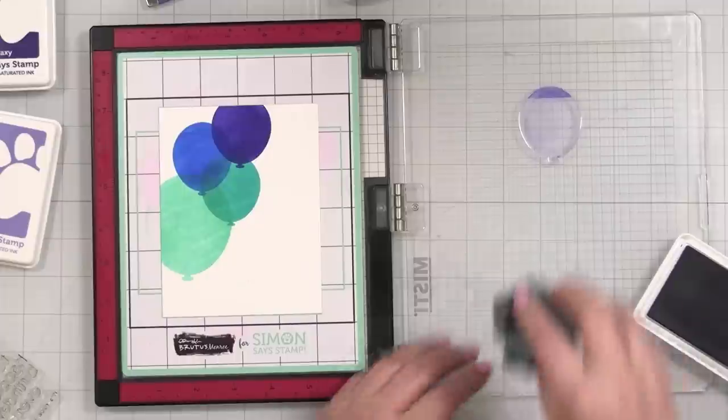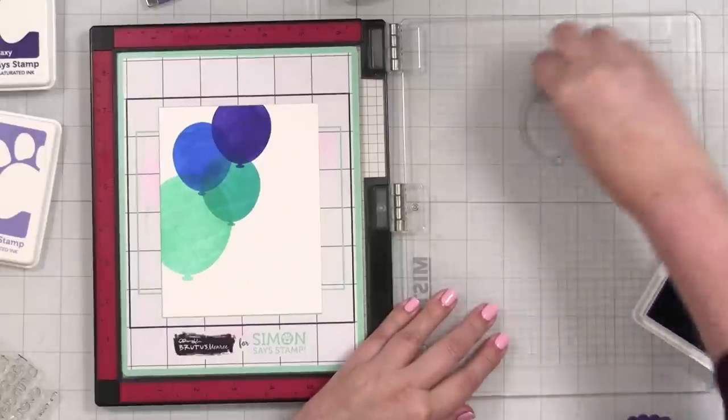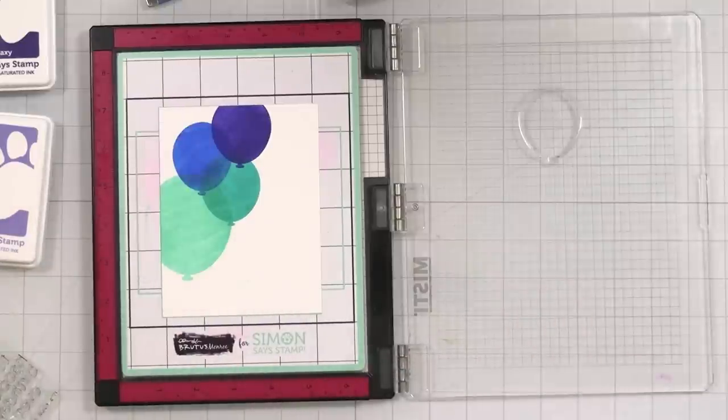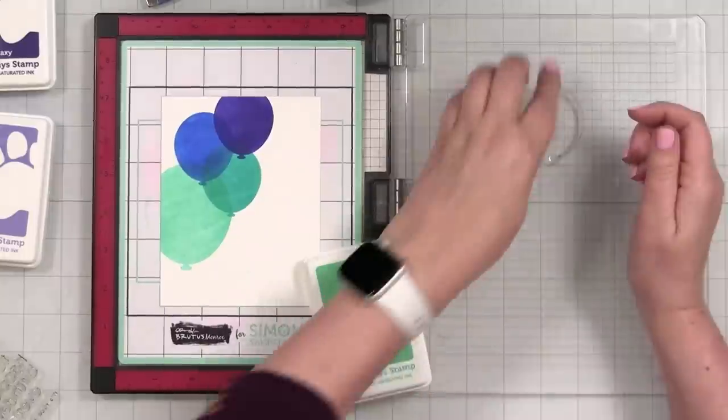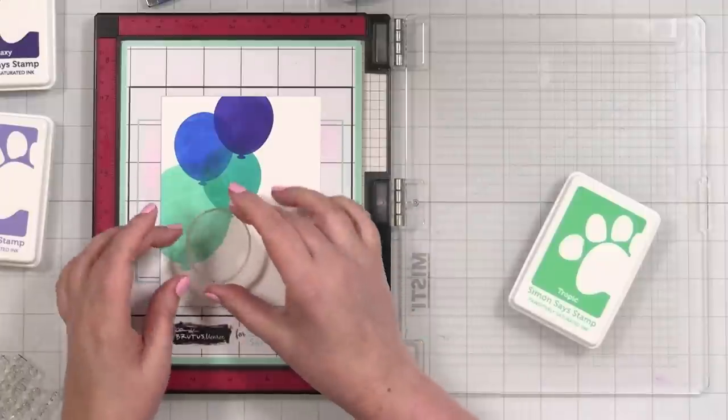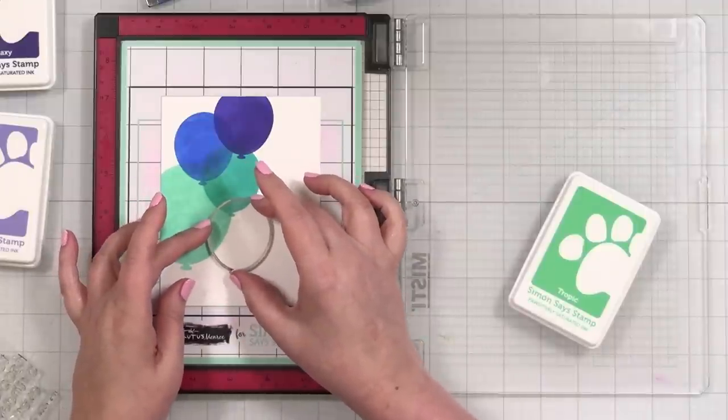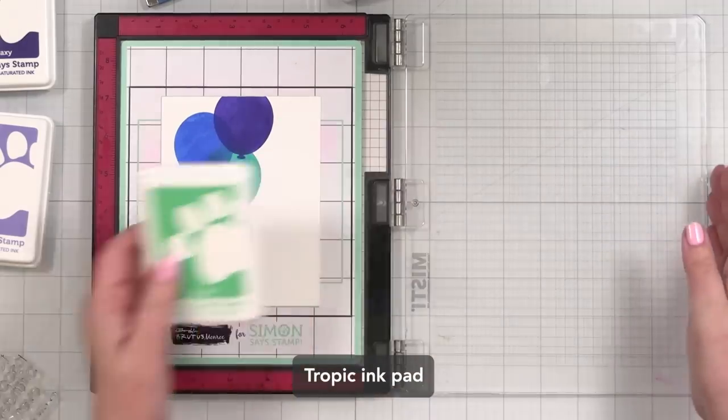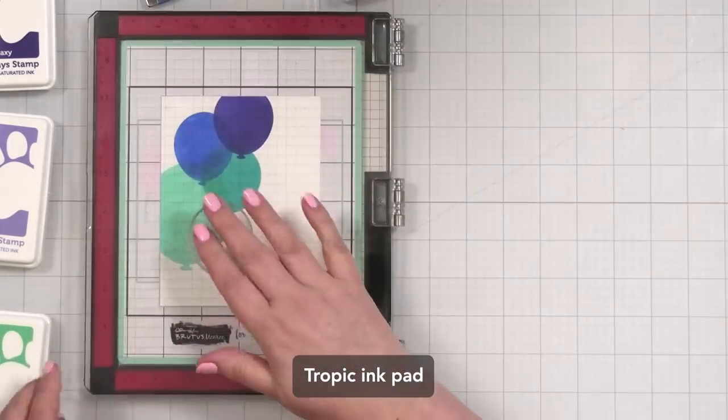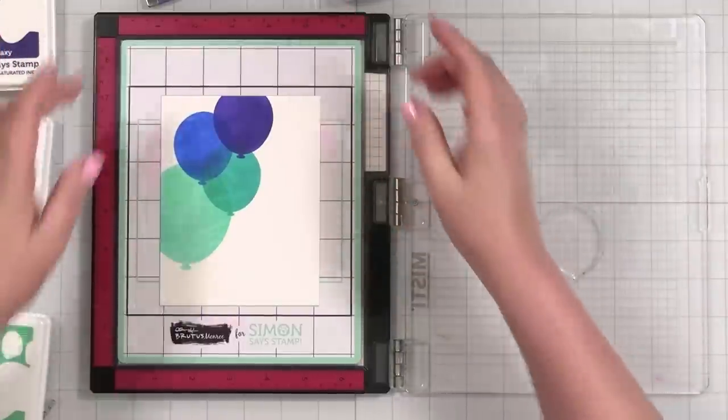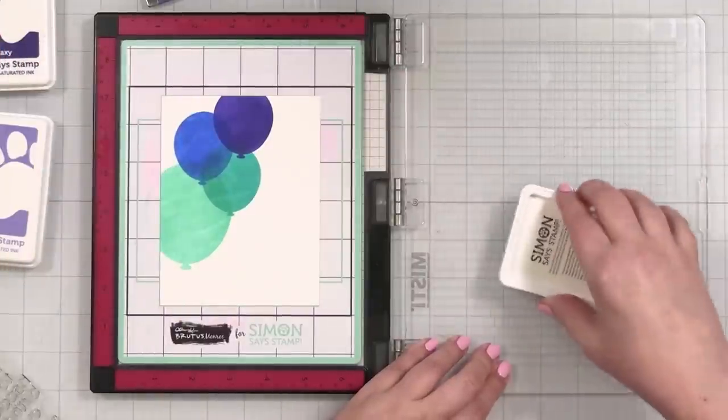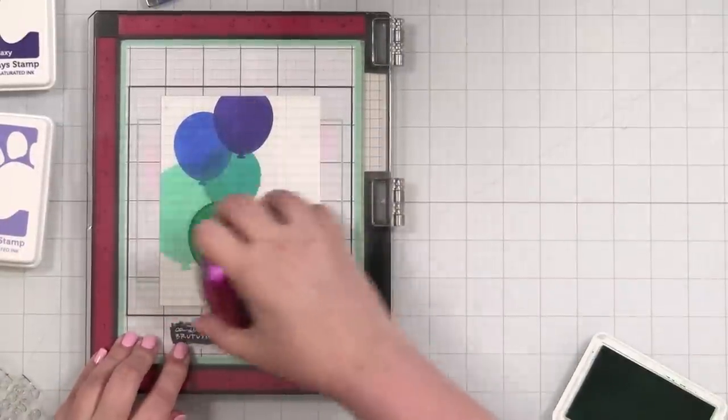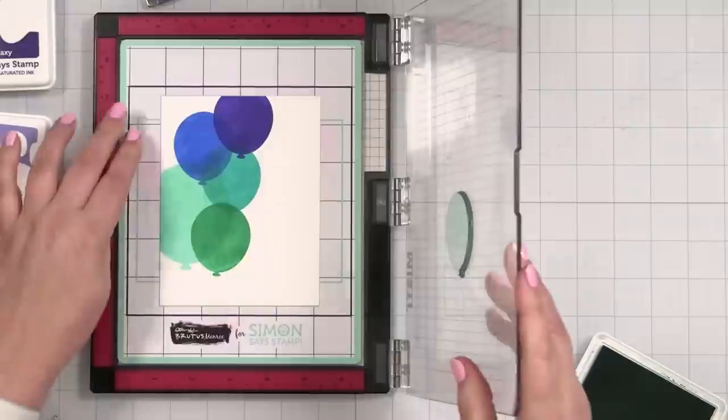You can see the pattern is starting to build. We're getting it going. Now I think I'm going to come down. I'm going to work my way down now here with a little overlap right here. For this one, I'm going to use Tropic. I'm working my way back in the rainbow, moving towards greens. This is a blue-green. Bring that down and transfer. That looks good too.